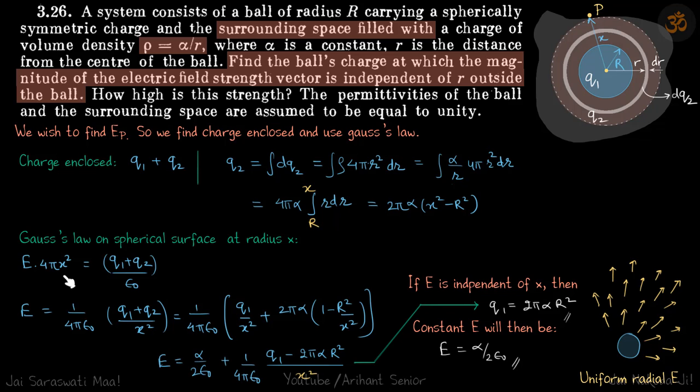E into 4π x² is equal to q1 plus q2 by ε₀, or E is equal to this. This x² term will go down.